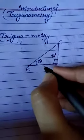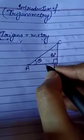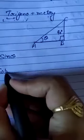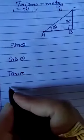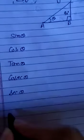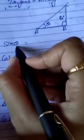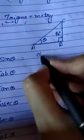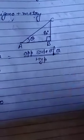Here we are using six types of trigonometry ratios. The first name is sin theta, the second name is cos theta, the third name is tangent, and the next one is cosecant theta, secant theta, and then cotangent theta. Now, what is sin theta? Here is my theta, and the value of sin theta is opposite side of theta divided by the hypotenuse.